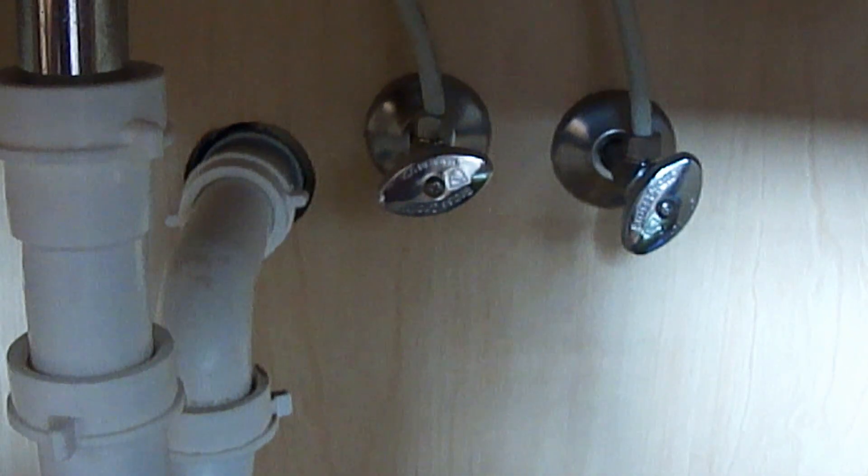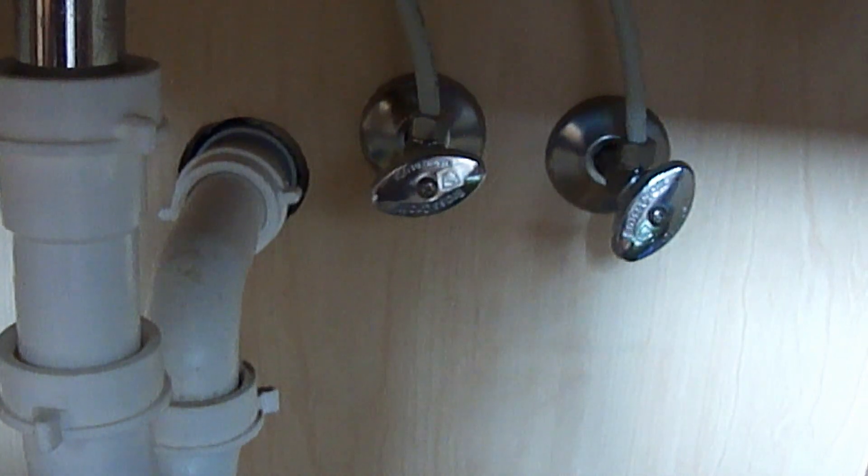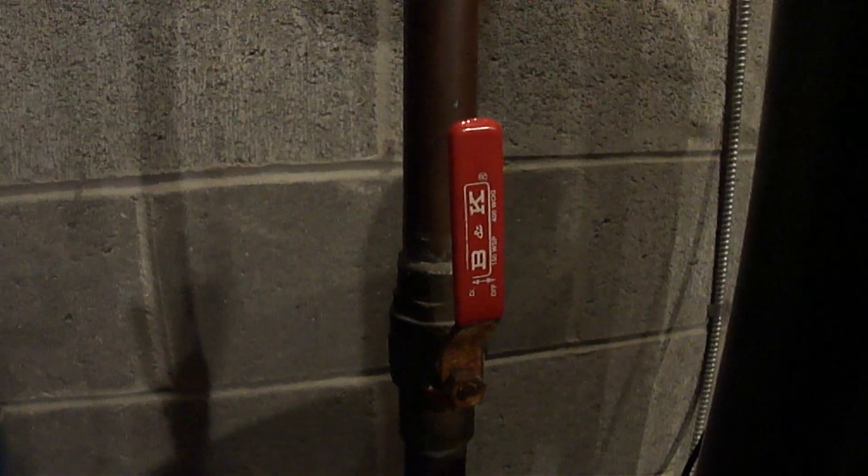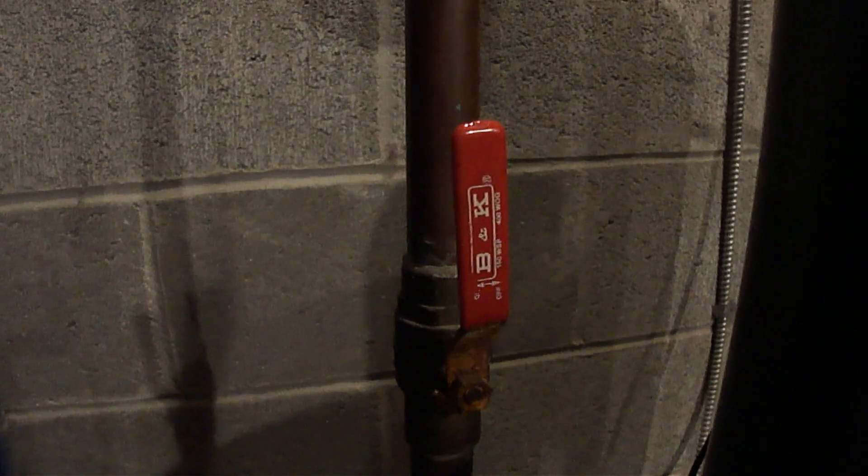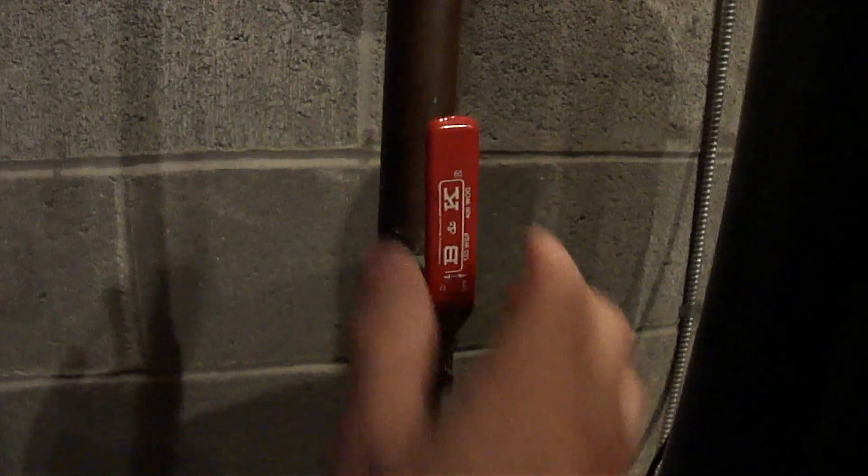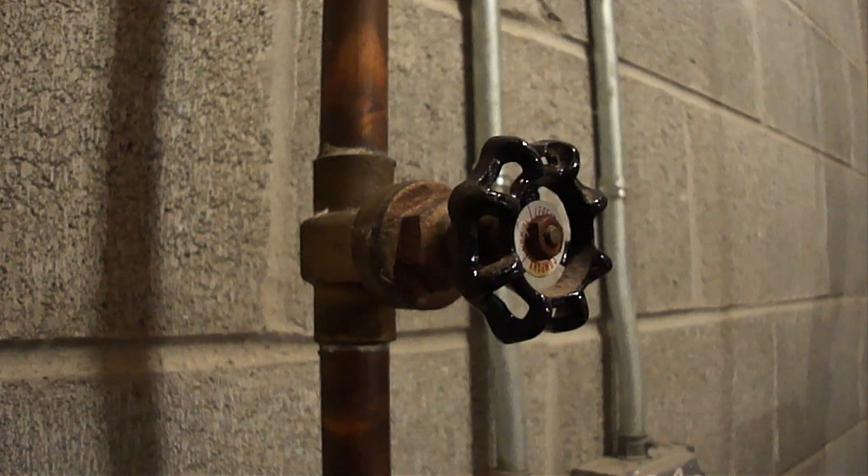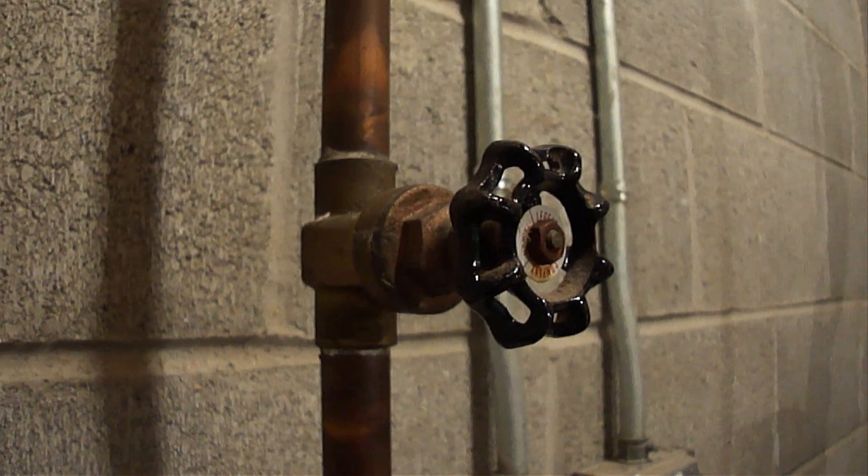If you don't have any hot and cold water shutoff valves located below the faucet, then you'll have to locate the main water supply shutoff valve. Your main water supply shutoff valve may look similar to this, which has a quarter turn handle. Turn the handle clockwise, which will stop at a quarter turn. Or your main water supply shutoff valve may look similar to this. Turn the handle clockwise until it stops.